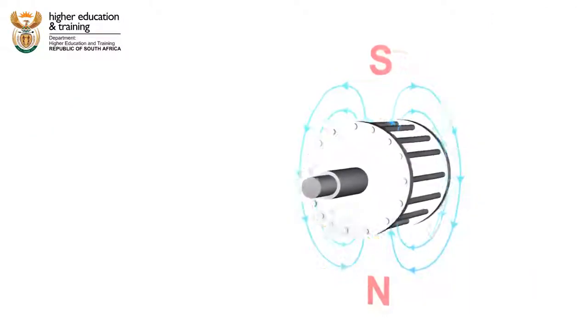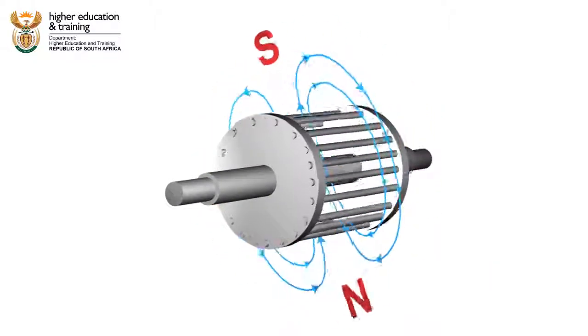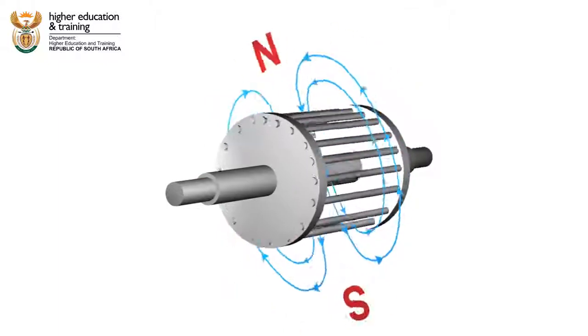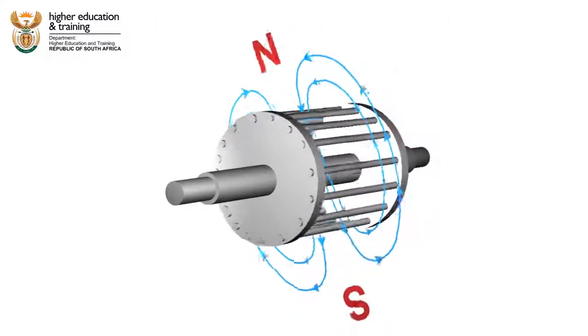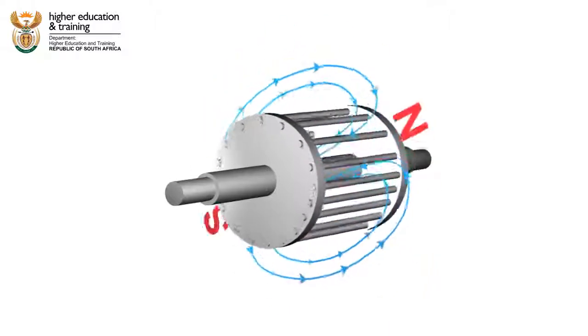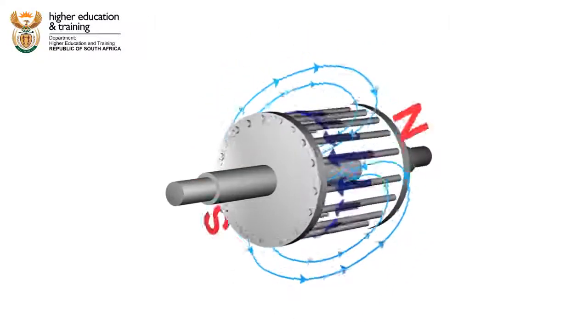Because the field is always changing relative to the rotor, it induces current in the rotor bars. The direction of this current can be determined using the right-hand rule. But we also know that this induced current in the rotor will create a rotor magnetic field.